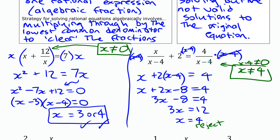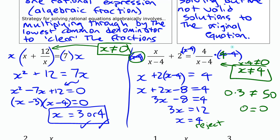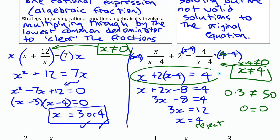The original equation has the restriction that x cannot be 4, because x minus 4 cannot be 0. Since x equals 4 is our solution but violates the restriction, we must reject it — it is an extraneous solution. Here's why: when you multiply by x minus 4, if x were 4, you'd be multiplying by 0. Multiplying by 0 can make unequal things appear equal, creating a false solution. The answer is: there is no solution.